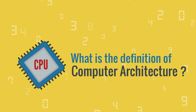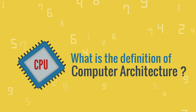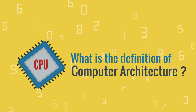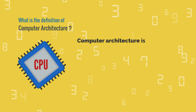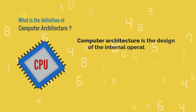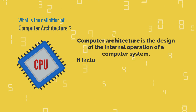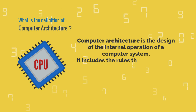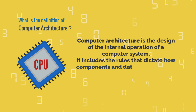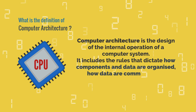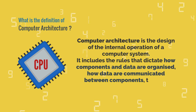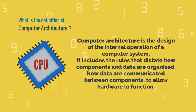What is the formal definition of computer architecture? Computer architecture is the design of the internal operation of a computer system. It includes the rules that dictate how components and data are organized, how data are communicated between components, to allow hardware to function.